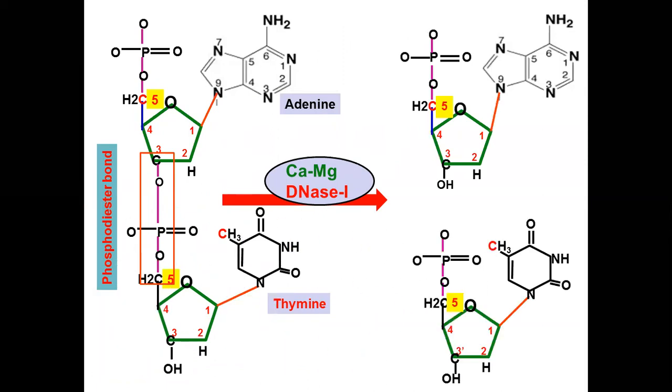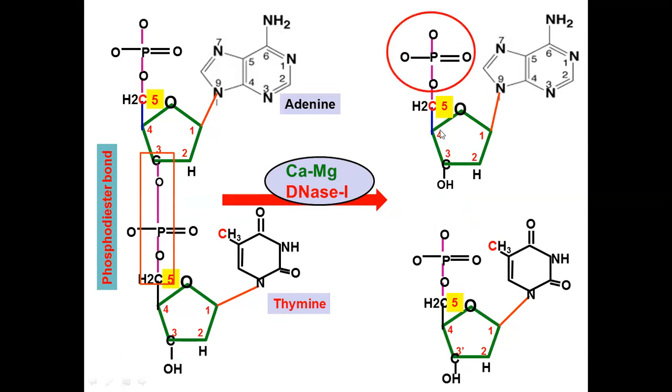Each nucleotide contains 5 prime monophosphate and 3 prime hydroxyl group. DNAase I is widely used in molecular biology and rDNA technology.